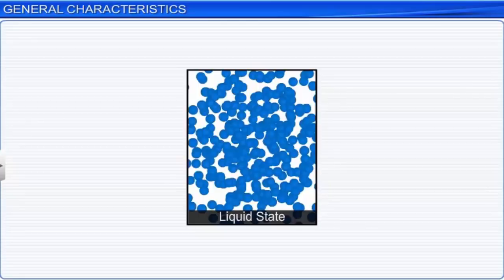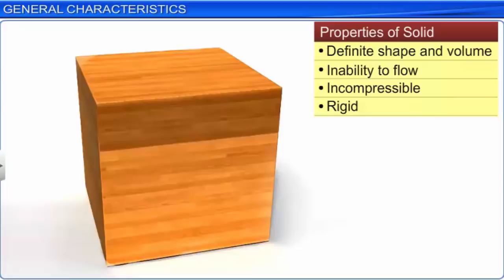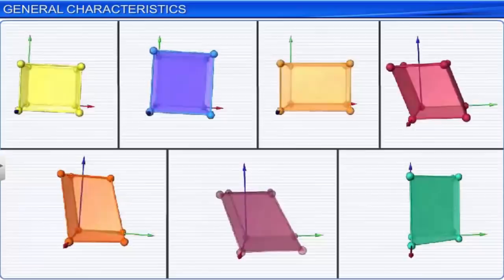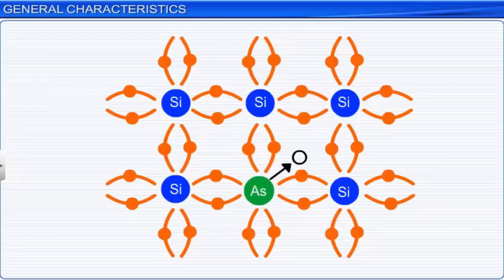Let us take a quick look at how the structure and properties of a solid are correlated to one another. The nature of the constituent particles, the forces of attraction between them, and their arrangement together determine the structure of a particular substance. Hence, any change in the structure of a substance changes its properties. For example, the conductivity of silicon increases with the addition of impurities such as arsenic. So, a solid with desired properties can be prepared by altering its structure.